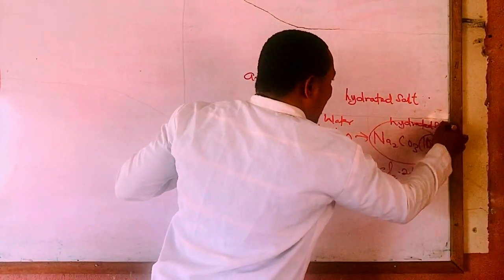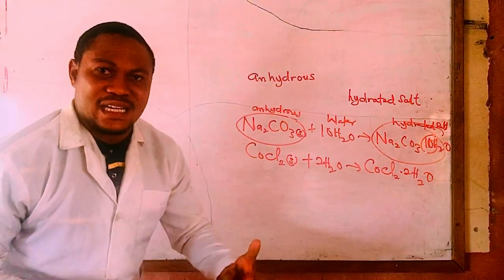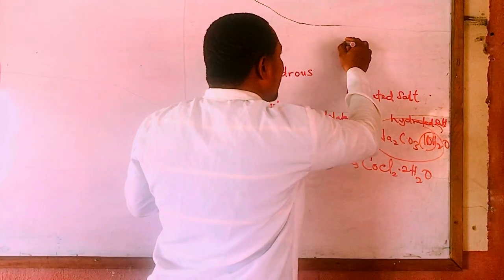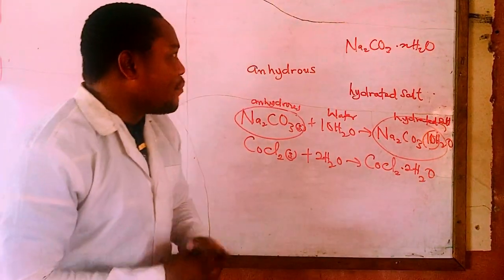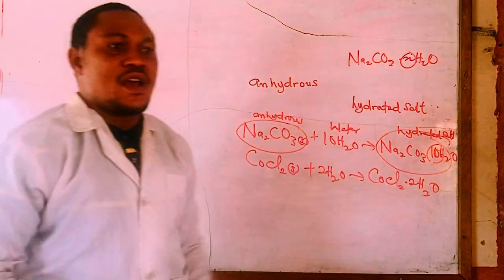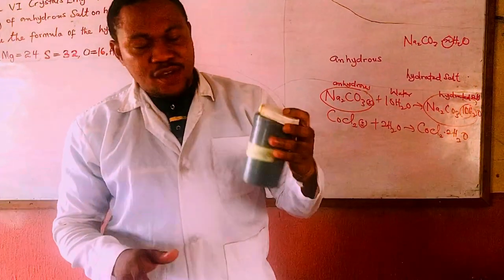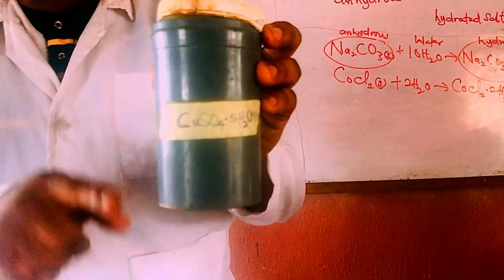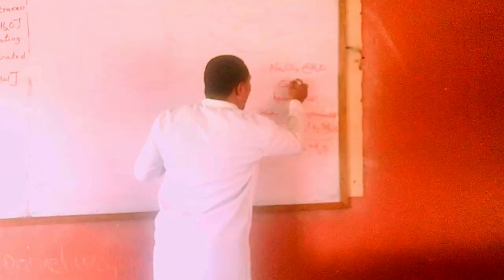Today we want to see practically how to determine the amount of water of crystallization in a given salt. If we are given Na₂CO₃·xH₂O, how can we determine the value of x? We will use copper(II) sulfate pentahydrate — CuSO₄·5H₂O — as our practical example. This is the salt we are using.